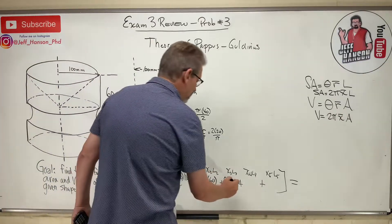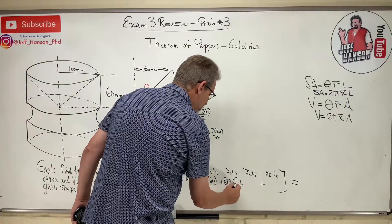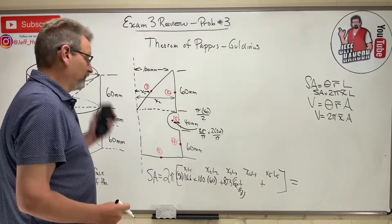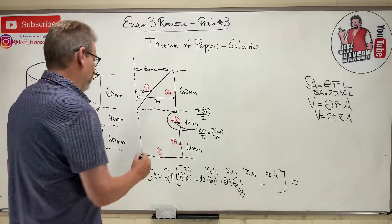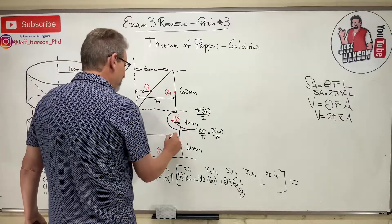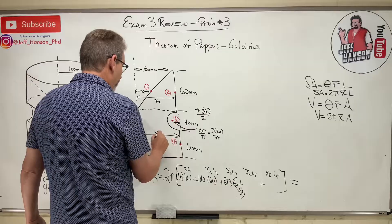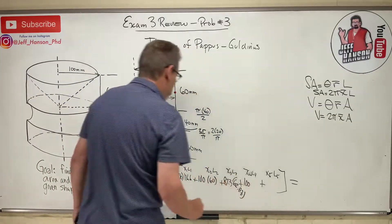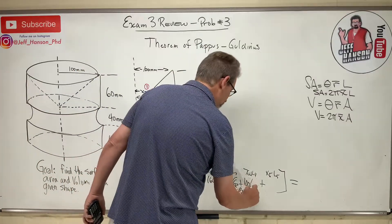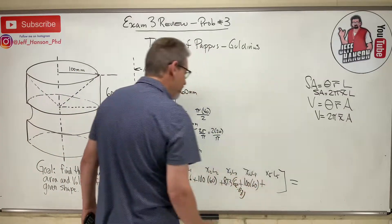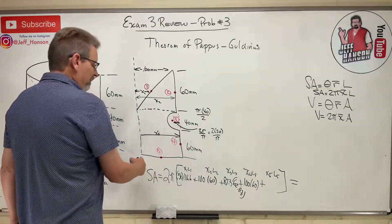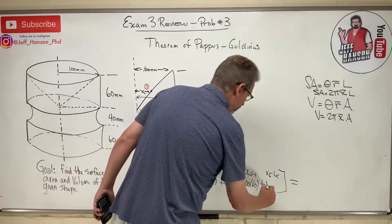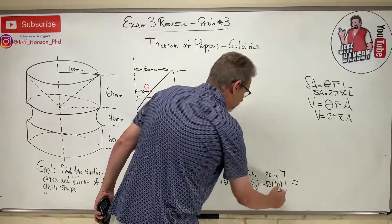For piece four, x-bar is 100 and the length is 60, so it contributes 100 × 60. For piece five, the centroid is at x = 50 and the length is 100, contributing 50 × 100.